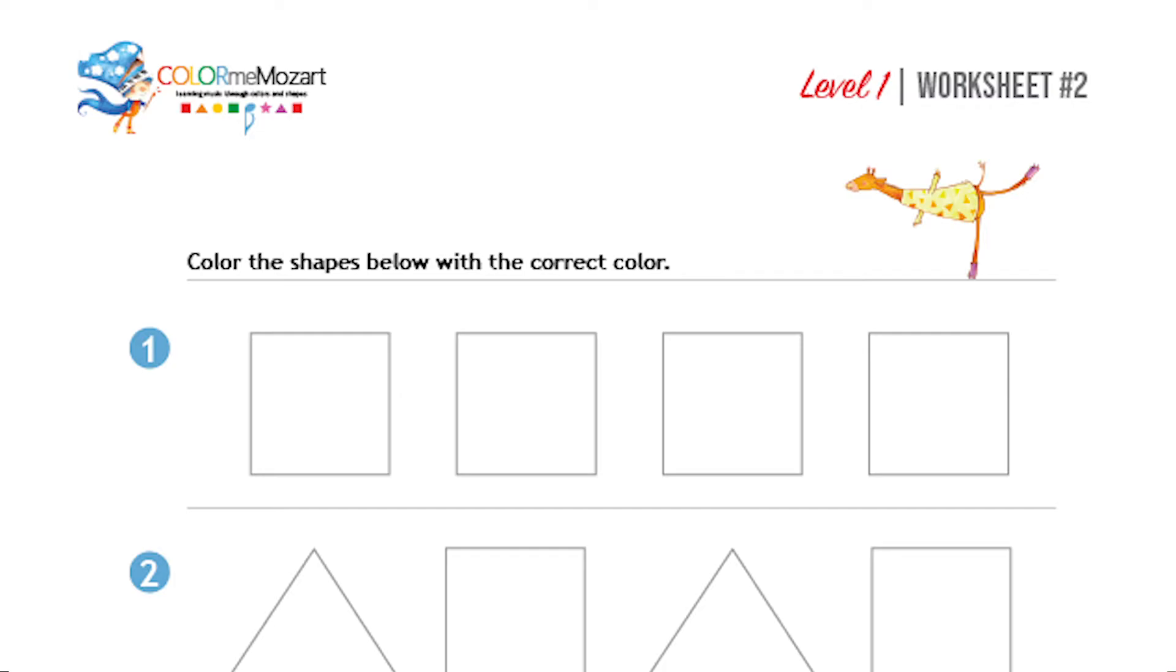As you can see here, our first set of exercises involves coloring the shapes with the correct color. The first exercise is a set of four squares. As we've learned already, the square is which note? I'll give you a second to answer. If you answered C, you're absolutely right. We're going to color those squares what color? If you answered red, you're also right. Go ahead and color those squares red. We have four red squares, four C notes. Excellent job.